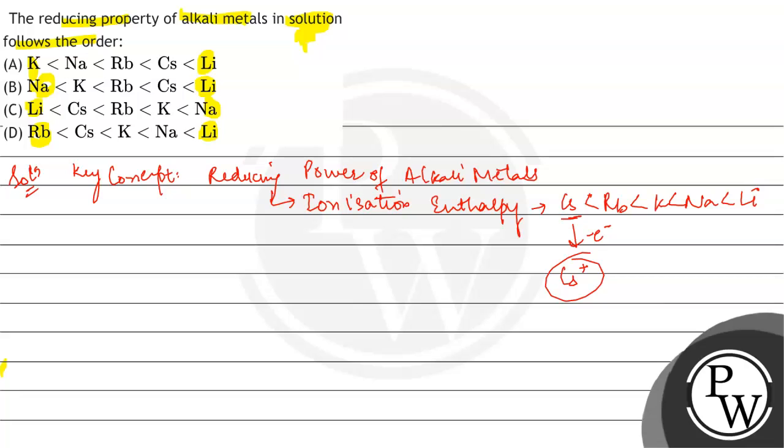Logically, the reducing power trend should be: lithium should have the least reducing power followed by sodium, potassium, rubidium, and caesium has the highest. This is the expected reducing power of these alkali metals. But what is the actual or observed trend?